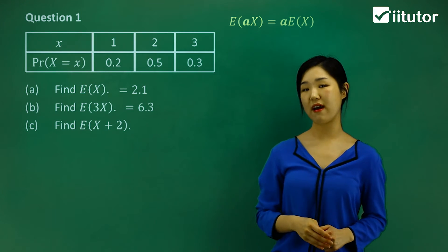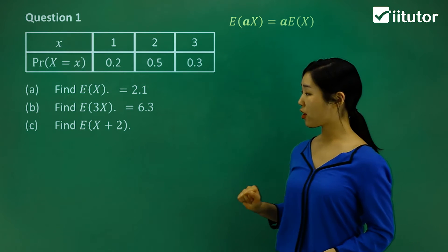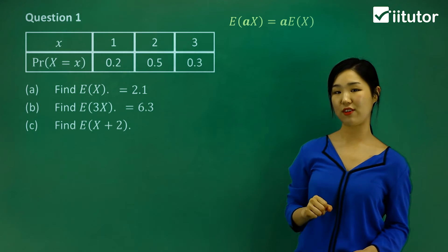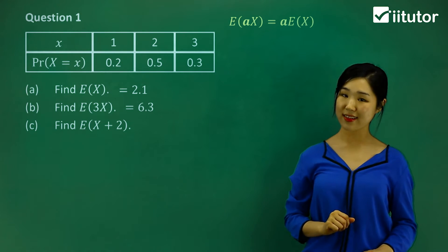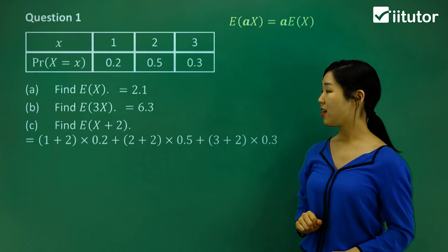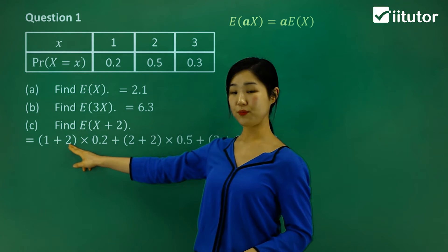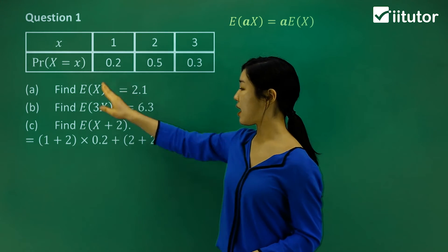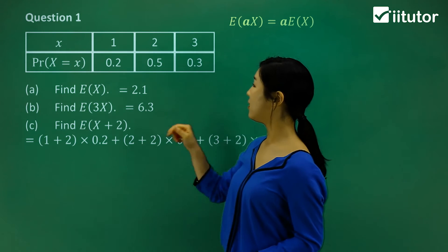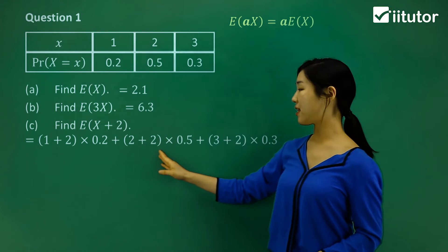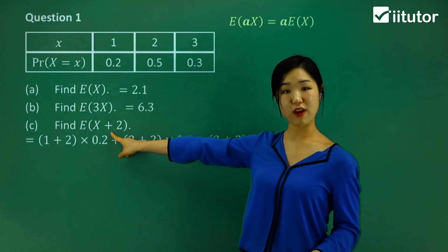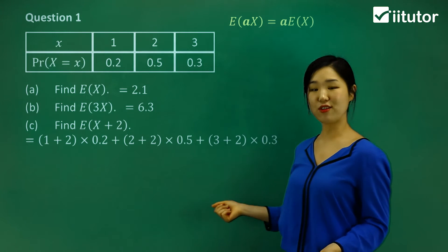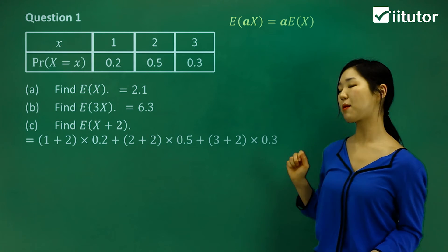Part C asks us to find the expected value of x plus 2. This time we're adding 2 to our variable, so we add 2 to each case and keep the same procedure. So: 1 plus 2 times 0.2, plus 2 plus 2 times 0.5, plus 3 plus 2 times 0.3. Make sure you utilize those brackets.